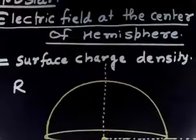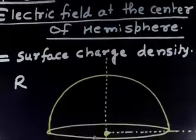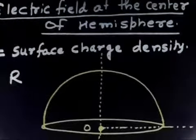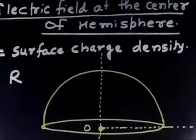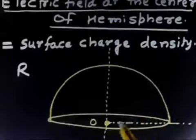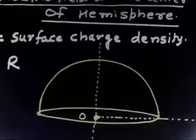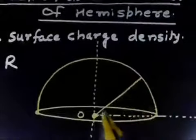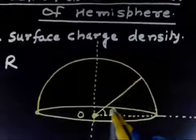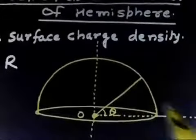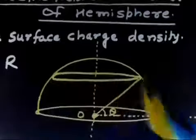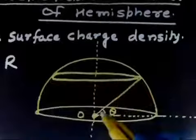How will we proceed to find the electric field at point O, the center of the hemisphere? What we can do is ring summation. Let us consider an angle theta, and at angle theta plus d-theta, we have an elemental ring.